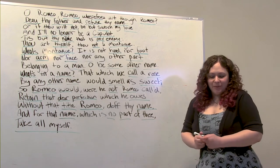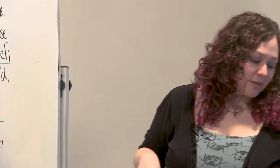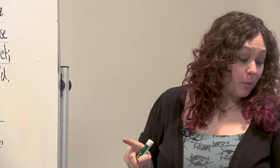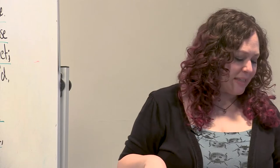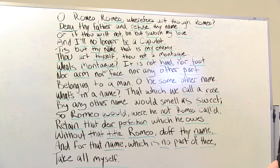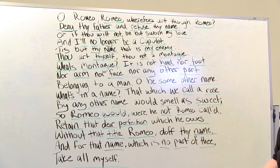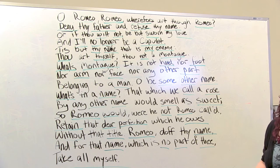All right, let's see what I did and compare it to what you did. Romeo, Romeo, wherefore Romeo? Deny father, refuse name. Wilt not? Sworn love, I'll no longer Capulet. Thy name, my enemy. Thou thyself, not Montague. What's Montague? Hand, foot, arm, face, nor part. Man — some other name? What's name? That rose other name smells sweet. Romeo would not Romeo. Retain dear perfection owes. Without title, Romeo name. Name no part thee. Take all myself.